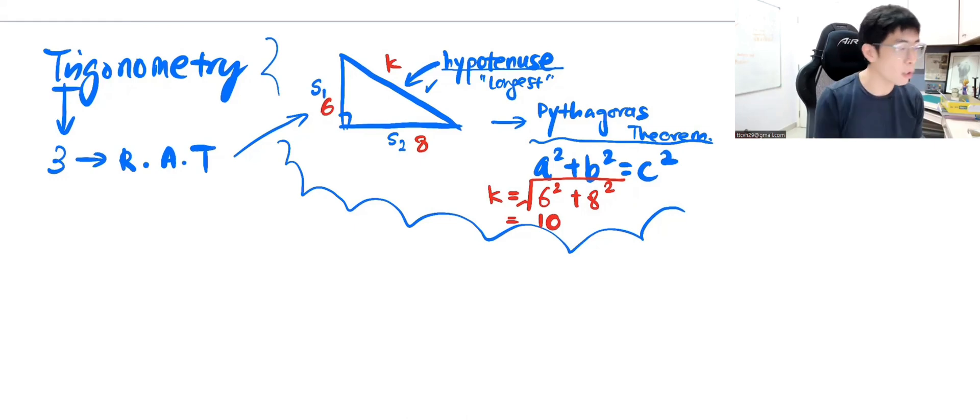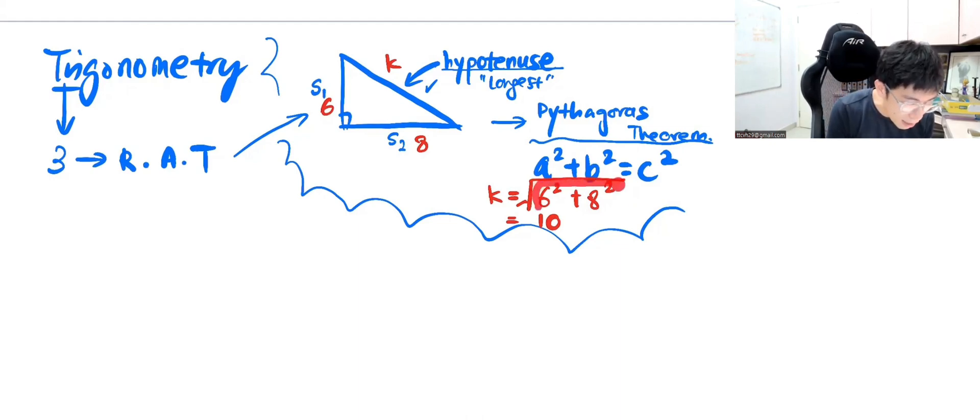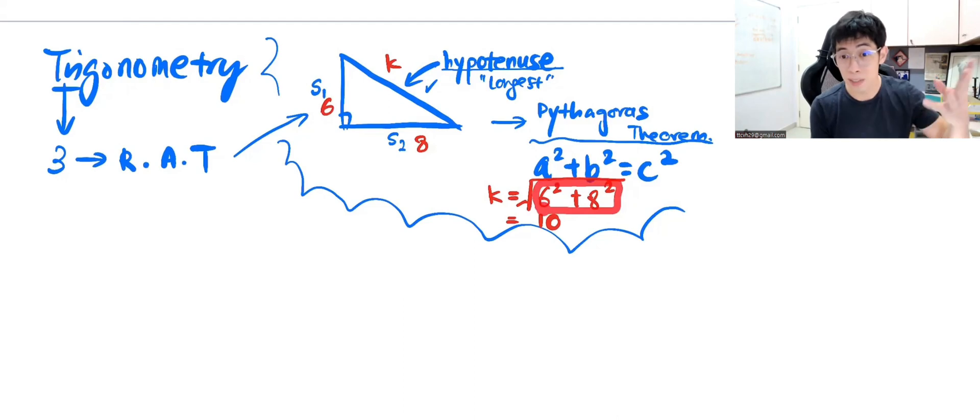A reminder to everybody, if you are using 570MS, which is the older version of 570 Casio calculator, it will be better if you can square them first. Like you're going to press 6² + 8², get 100, and then you square root the answer.